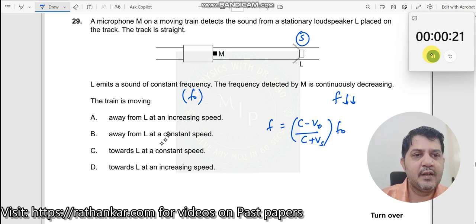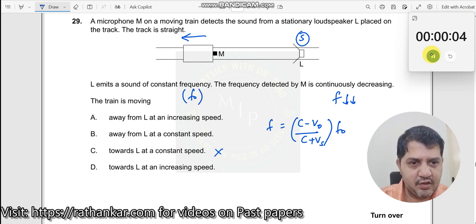The train is moving. Now whether the train is moving at increasing speed or constant speed, that's the question over here. Now, if the frequency is decreasing, the pitch is decreasing, which means definitely this train is moving away from here. So towards is wrong.